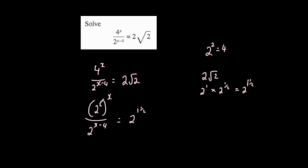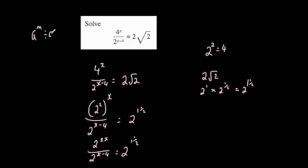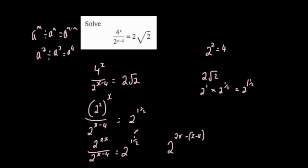Multiplying the powers on the left gives 2 to the power of 2x divided by 2 to the power of x minus 4, equals 2 to the power of 1 and a half. When you divide indices with the same base you subtract the powers. So we get 2 to the power of 2x minus (x minus 4), equals 2 to the power of 1 and a half.